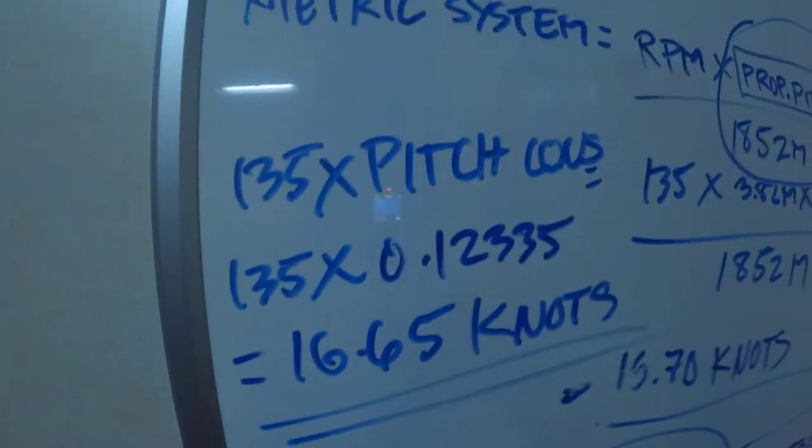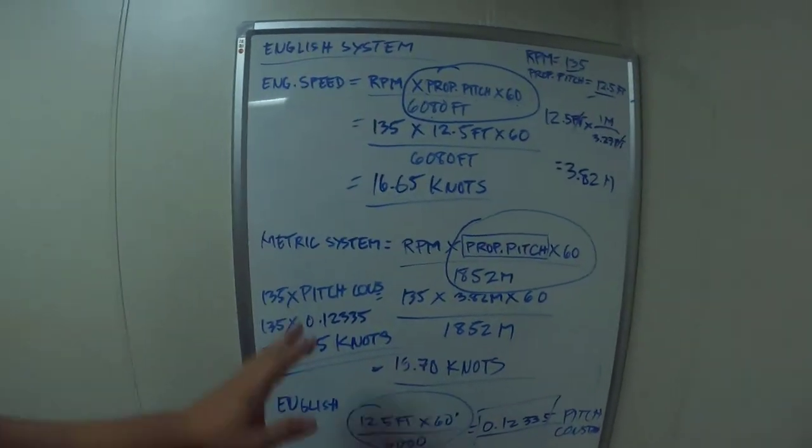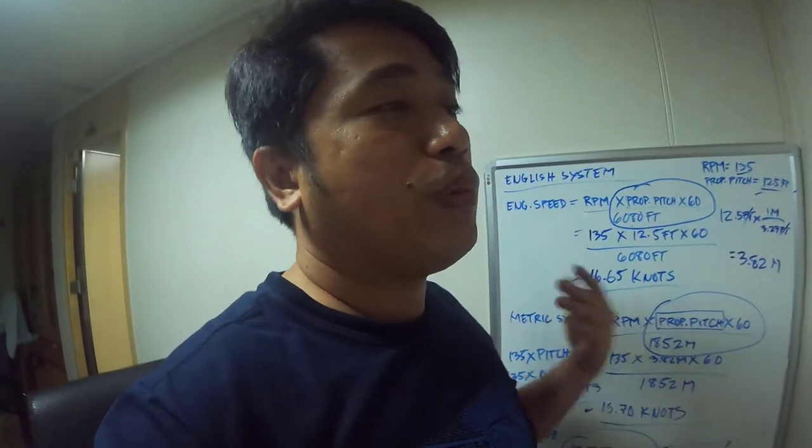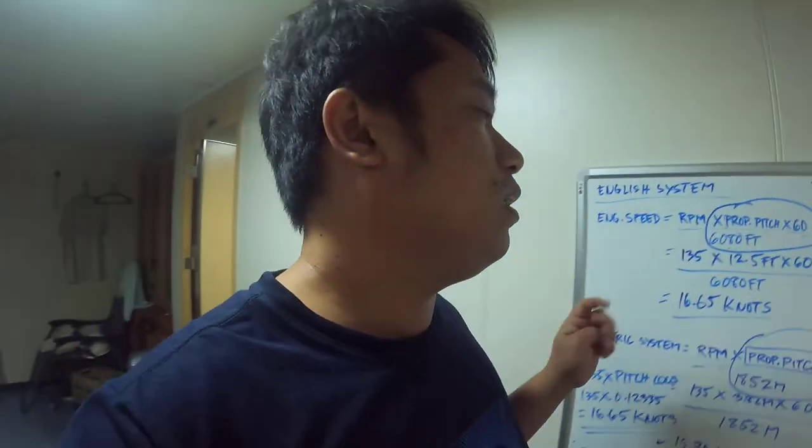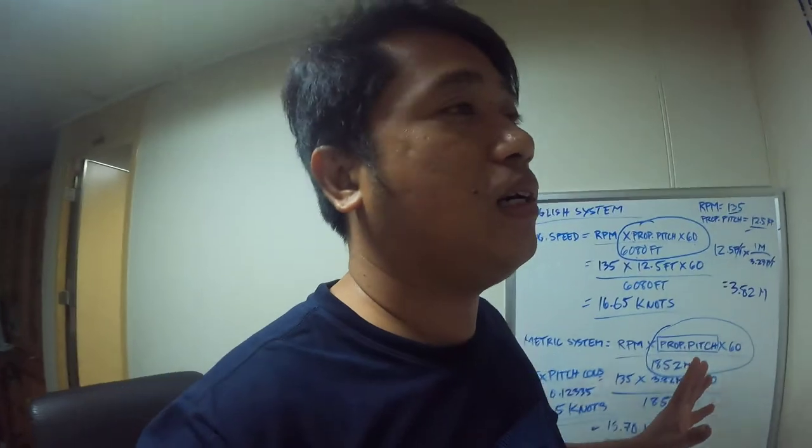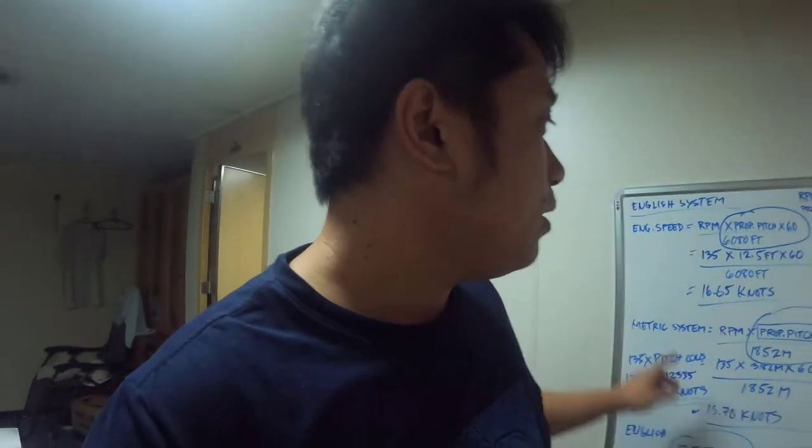So I hope you understand guys why there's pitch constant and propeller pitch. The propeller pitch you get from the ship specifications or it's located at the front of the logbook, on the first page of the engine logbook.